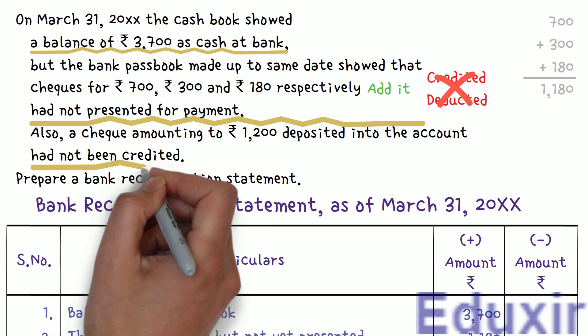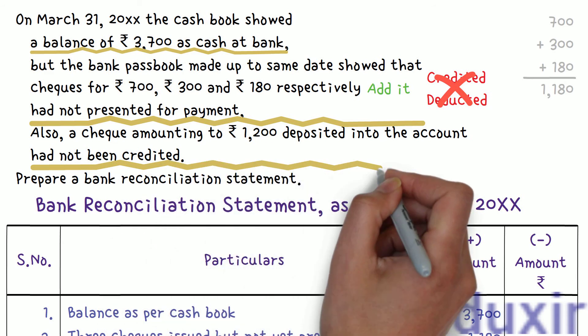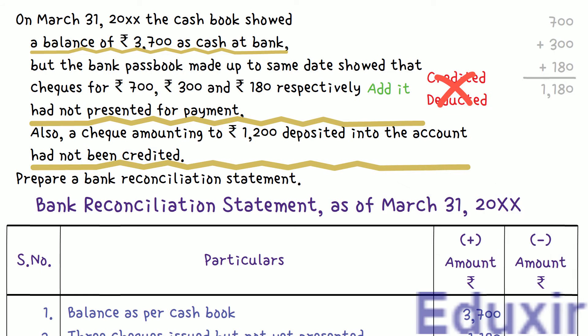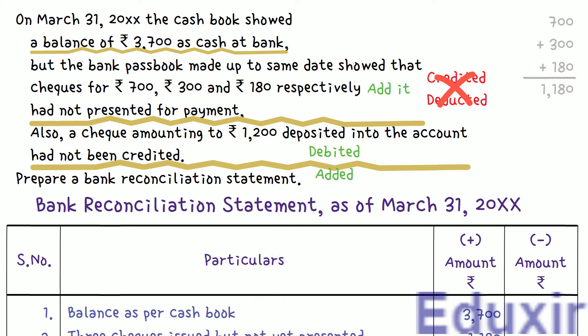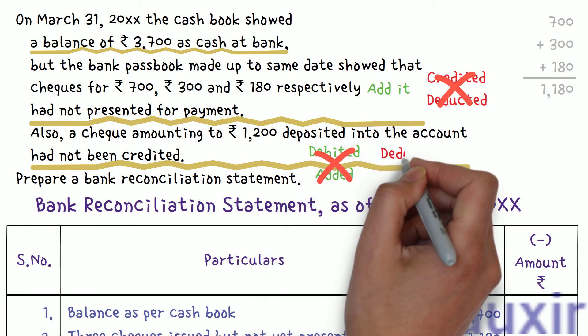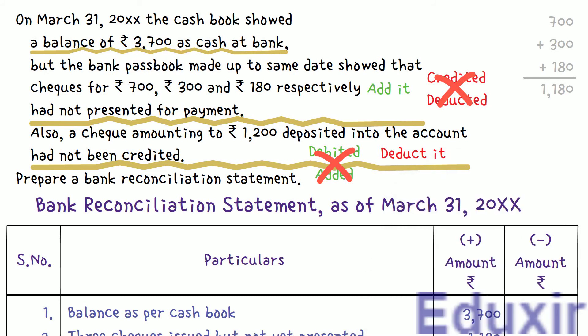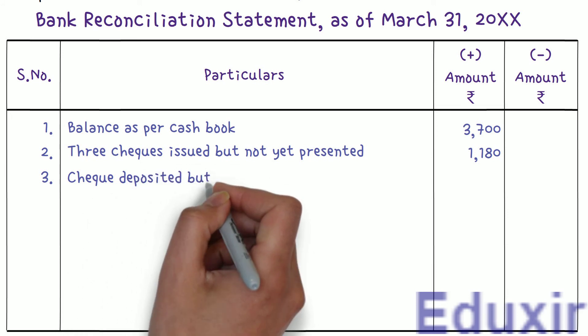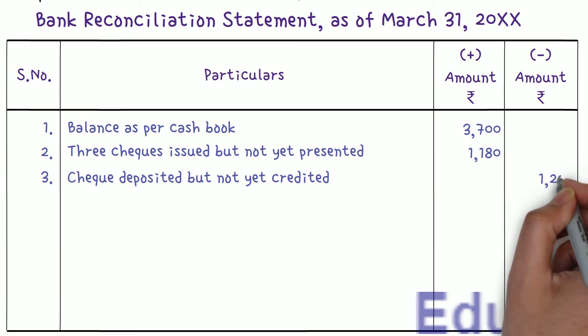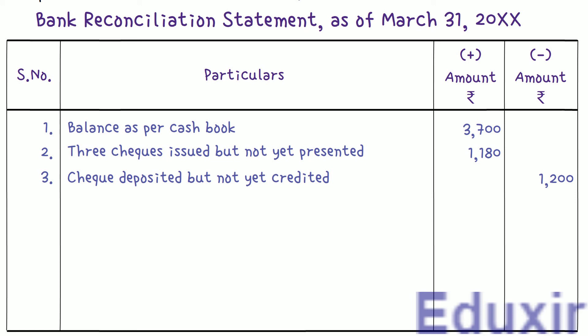The next detail: a check for 1200 rupees is deposited in the bank account but not yet collected. This is caused by timing difference. When a check is taken to deposit into the bank, it is immediately recorded as a debit in the cashbook. But this amount is not yet reflected in the bank passbook as it is not yet collected. So we need to deduct this amount from the cashbook balance to get the passbook balance. We write the particulars as 'check deposited but not collected' and deduct 1200 rupees. That completes the recording of all details into the bank reconciliation statement.